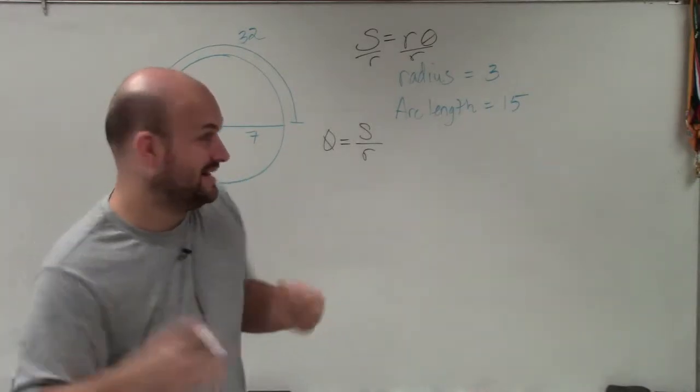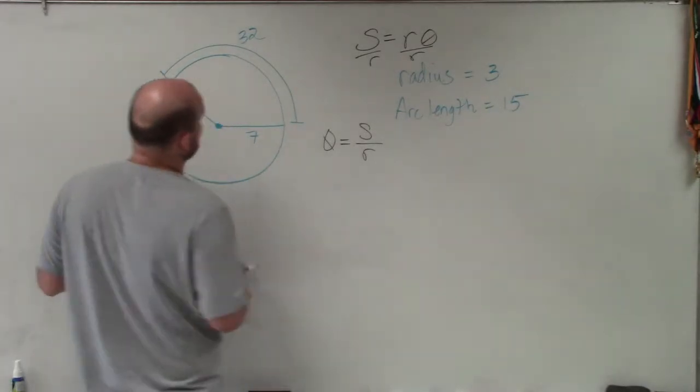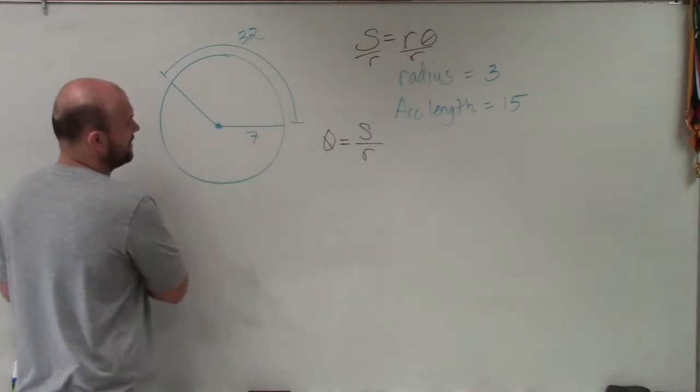again, remember, in radians, what we simply need to do is go ahead and take our arc length and divide it by our radius.